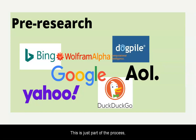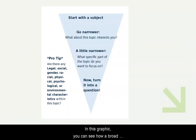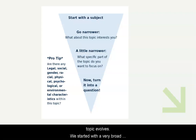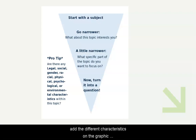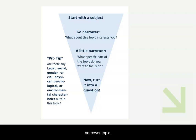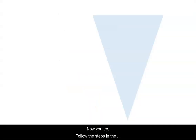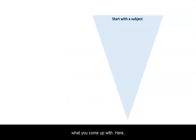This is just part of the process, so be open to it and be flexible. In this graphic, you can see how a broad topic evolves. We started with a very broad one- or two-word topic — that is where you can start with your pre-research. Take what you learned there, add the different characteristics on the graphic or think about the five W's, then follow your leads to a narrower topic. Now you try: follow the steps in the graphic, make some notes and see what you come up with.